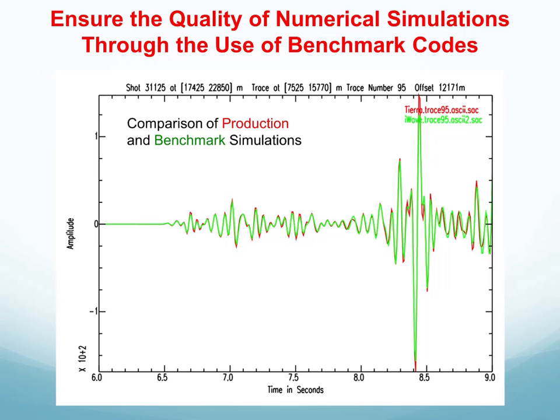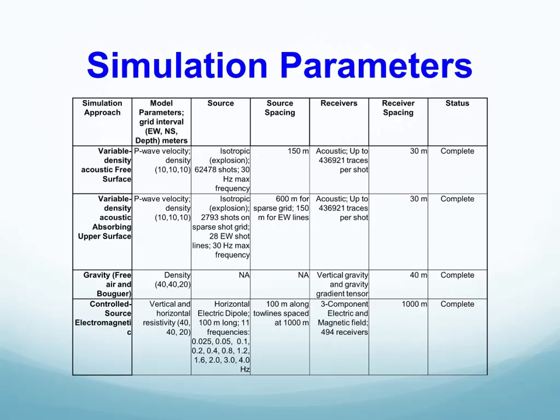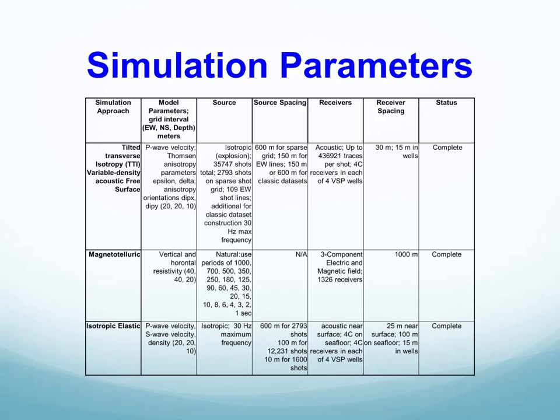I'm now going to run through the simulation parameters. Each row lists one of the main simulations done: variable density acoustic, variable density acoustic with absorbing upper surface, gravity, controlled source EM, TTI simulation, magnetotelluric, and elastic simulations. We define here the model, the sources used, and other information about the simulation. All these simulations are now complete.